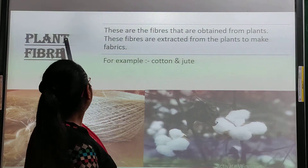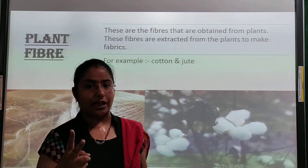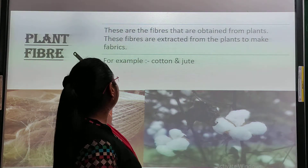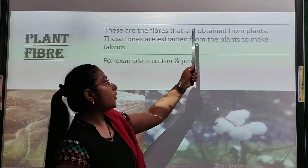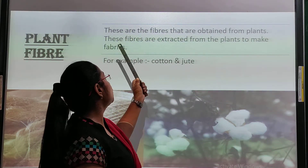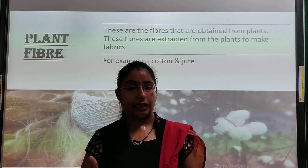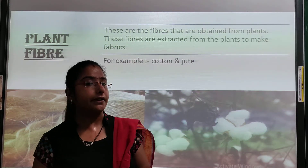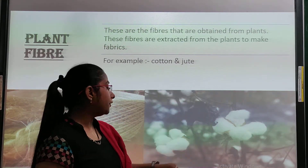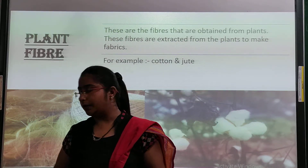Now, plant fibers. Natural fibers are of two types: plant fibers and animal fibers. The fibers that are obtained from plants are called plant fibers. For example, cotton and jute are examples of plant fibers.